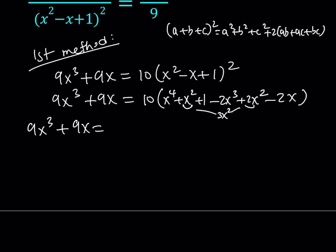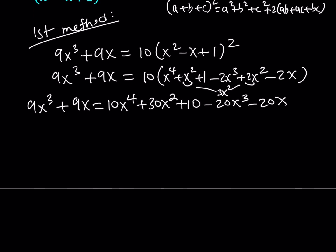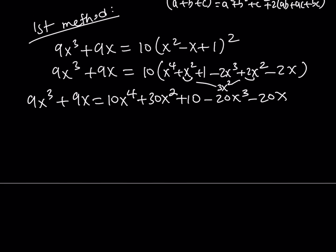So let's distribute the 10, 10x to the fourth. I do have 3x squared, so it's going to be 30x squared plus 10 minus 20x cubed minus 20x. I'd like to put everything on the same side, but I want x to the fourth to be positive. Therefore, let's put everything on the right hand side.